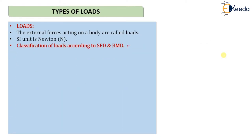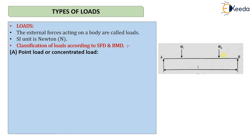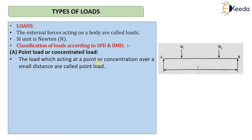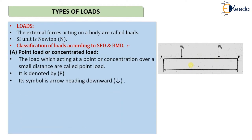The next classification is according to shear force and bending moment diagrams — based on how loads are applied. The first type is point load, also known as concentrated load. A load acting at a particular point or concentrated over a small distance is known as a point load. It is generally denoted by P or W, and its symbol is a downward arrow.